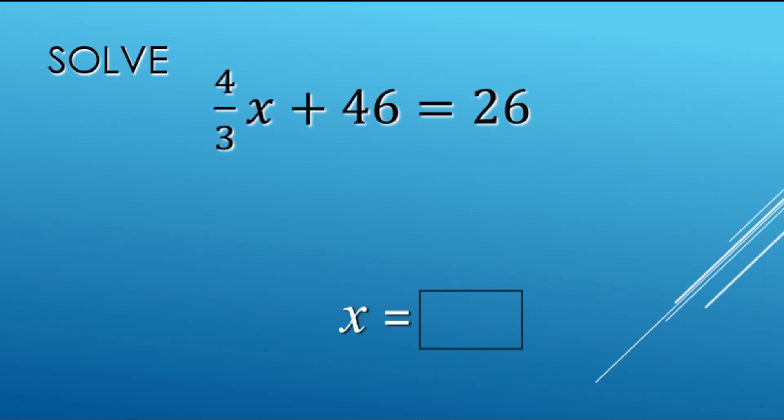So we're going to undo operations. First we're going to undo the plus 46 with a minus 46 to both sides.